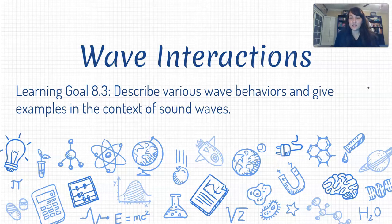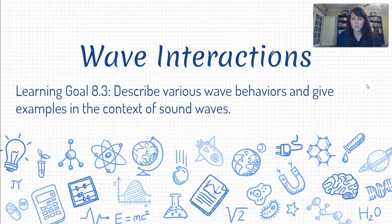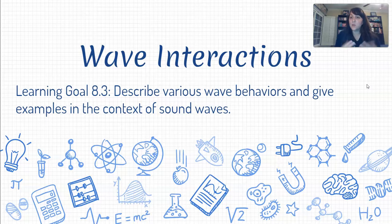And then in our second lesson, we focused in on the relationships among some of those different characteristics — discovering things like frequency and wavelength are inversely related to each other. And the speed of a wave is independent of all of those characteristics, except for the medium that the wave is traveling through. So now that we've got some of those basics under our belt, in this lesson we're going to be focusing in on some of the more unusual behaviors of waves, and how they interact with each other, and how they interact with matter around them.